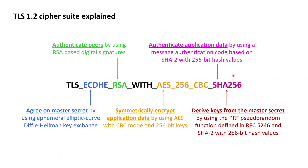The second place this cryptographic hash function is used within TLS 1.2 is as part of the PRF pseudorandom function, which is used by TLS to derive encryption keys and keys for HMAC from the initial master secret agreed on by the client and the server. This is it — we just successfully deciphered a TLS 1.2 cipher suite. Knowing about the five cryptographic processes and having a basic idea of the essentials of cryptography, deciphering such a cipher suite is suddenly not that difficult anymore.